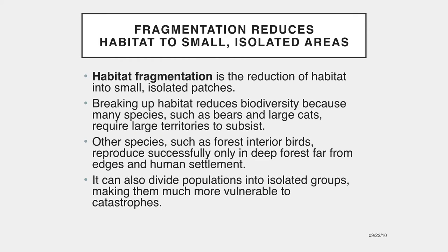In addition to the loss of total habitat area, the loss of large contiguous areas is a serious problem. A general term for this is habitat fragmentation — the reduction of habitat into small, isolated patches. Breaking up habitat reduces biodiversity because many species, such as bears and large cats, require large territories to subsist. Other species, such as forest interior birds, reproduce successfully only in deep forests, far from edges and human settlement. Predators and invasive species often spread quickly into new regions following fragment edges.